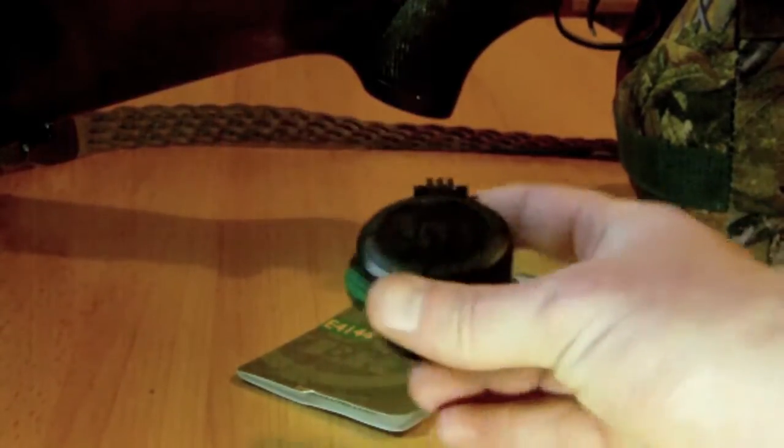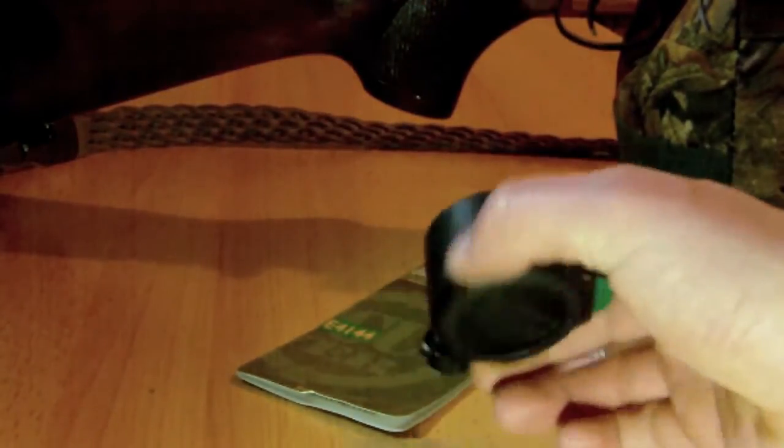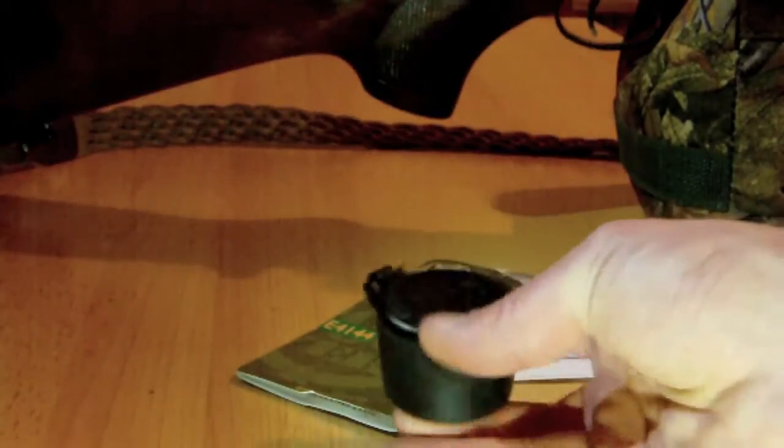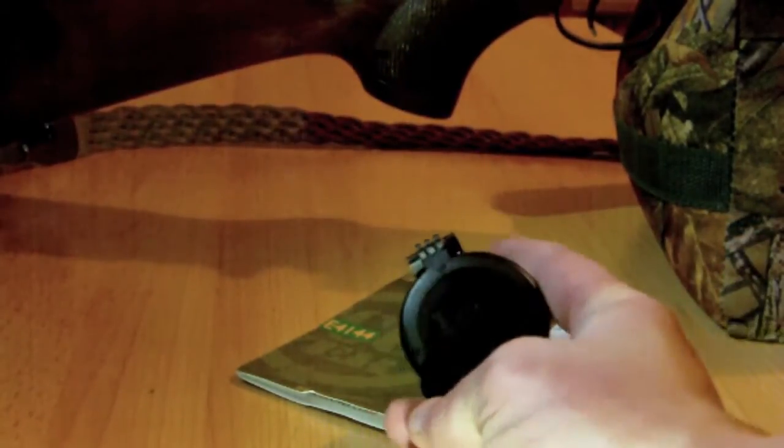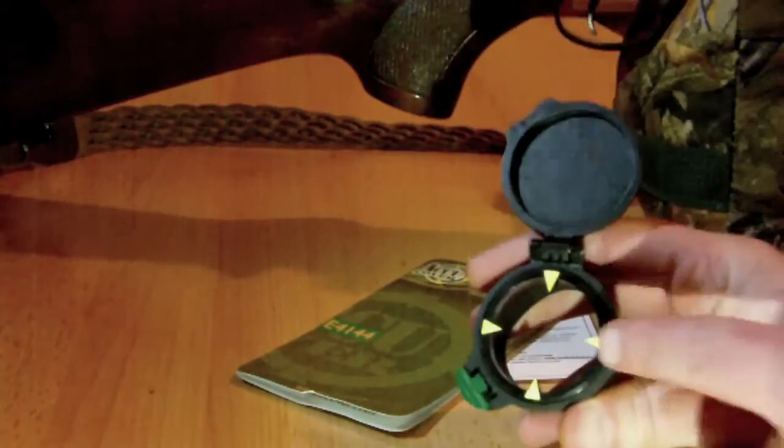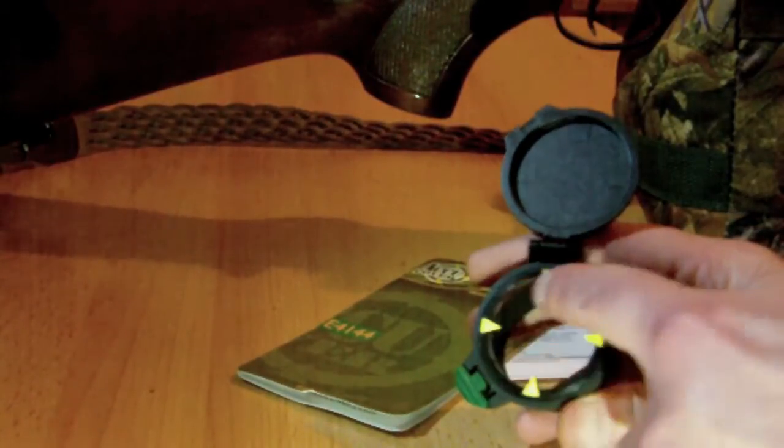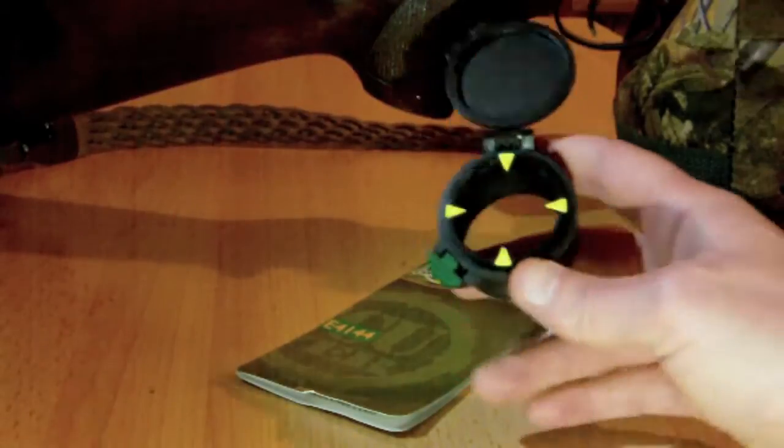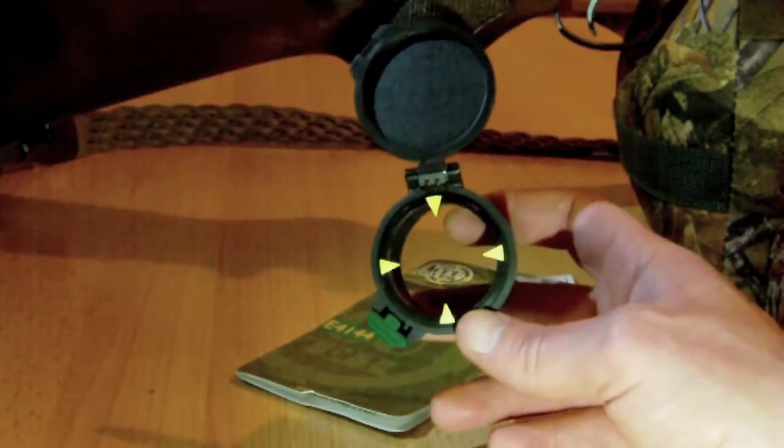This is an AccuCover lens cap as you're probably familiar with. I don't know if you get these in the States, but what it's got is when you flip it up, it's got these arrows. Now the advantage with these arrows is you line them up with the crosshairs on your scope.